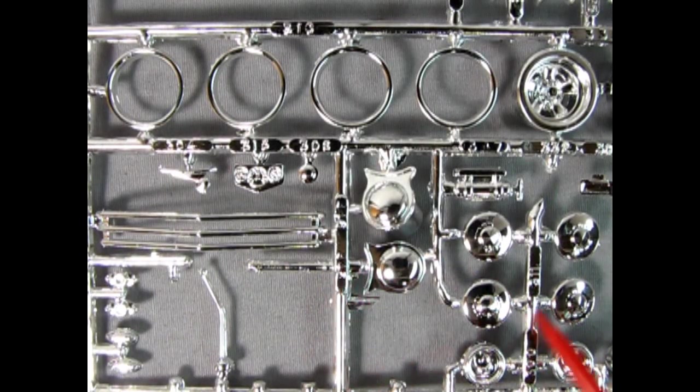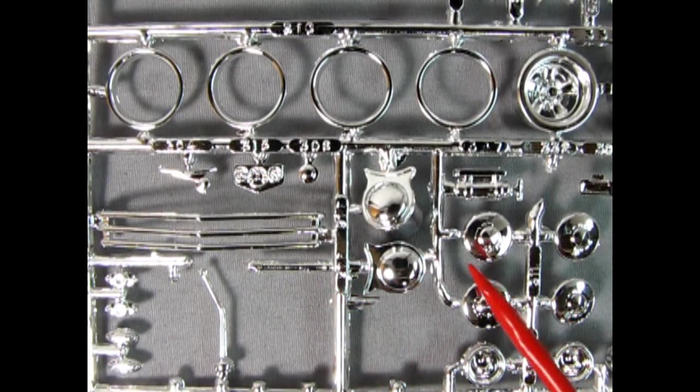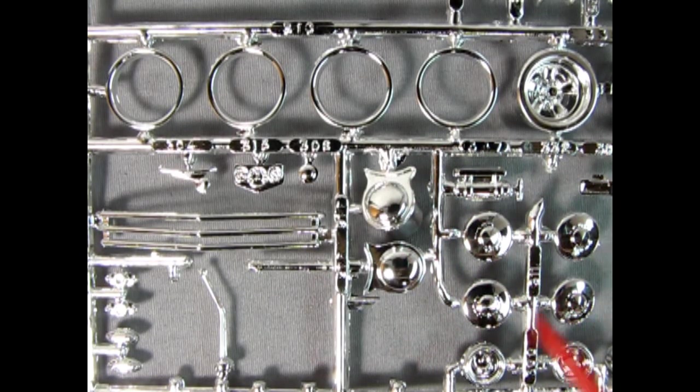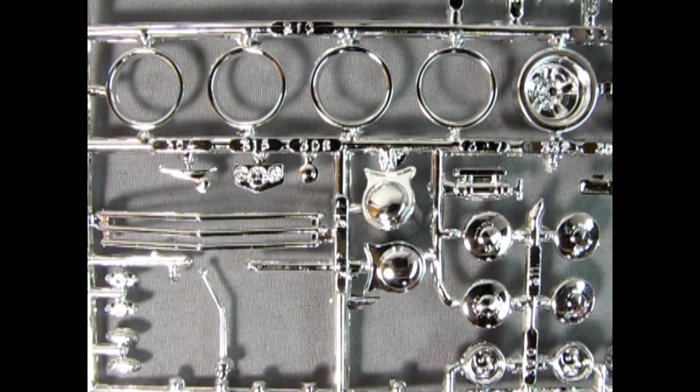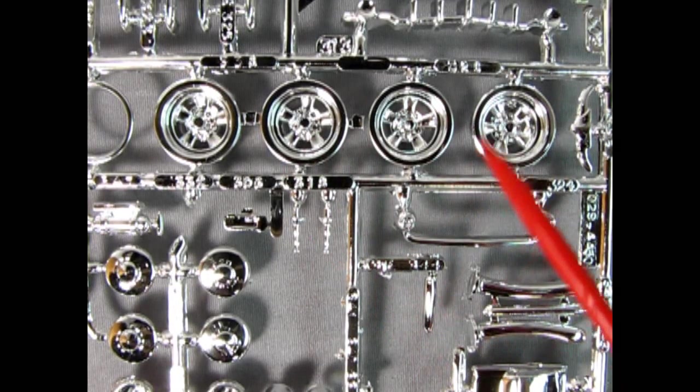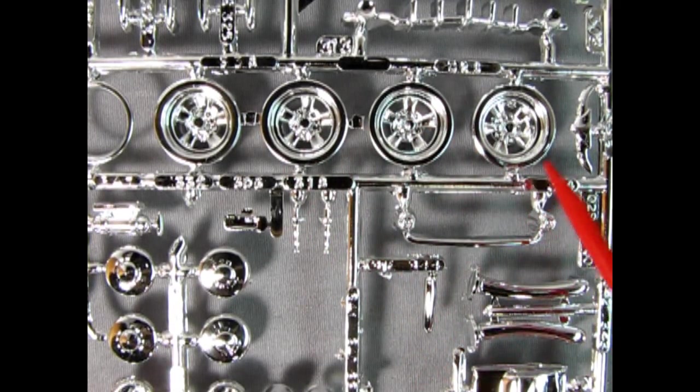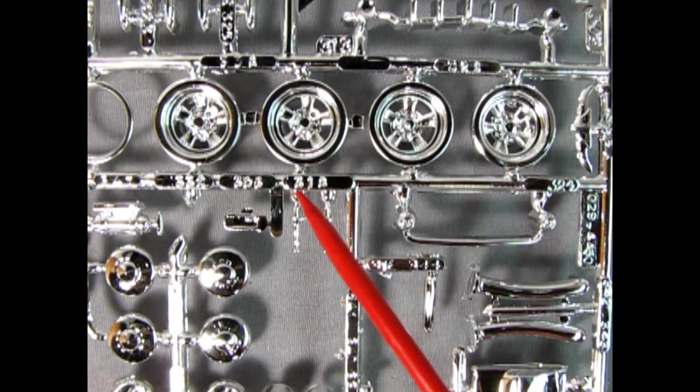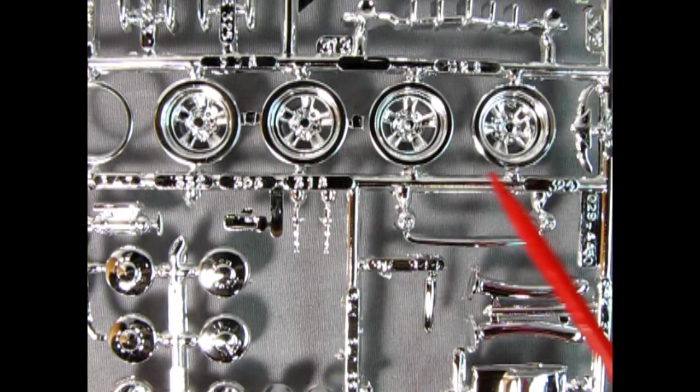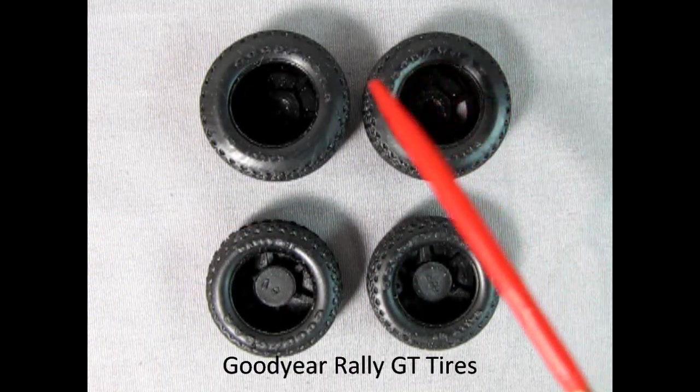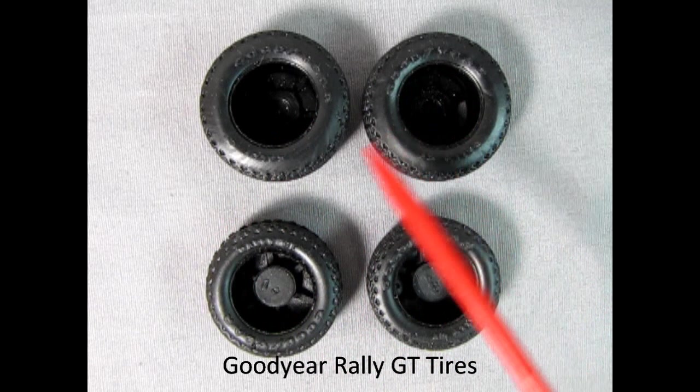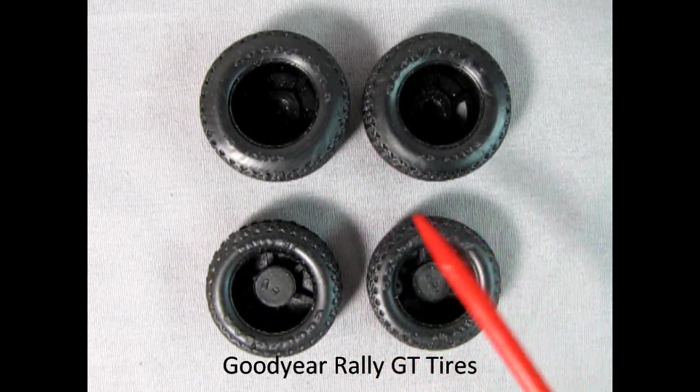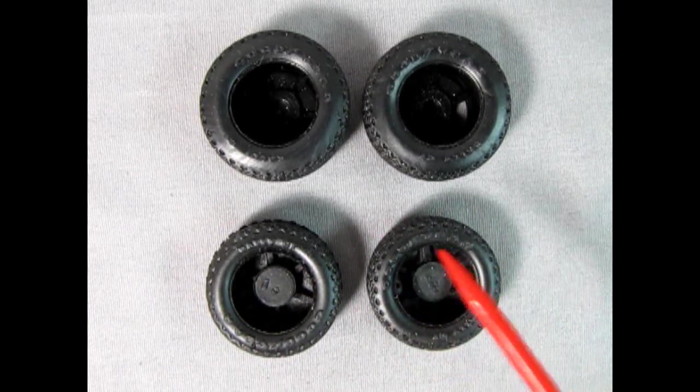Examining the parts on the chrome tree we can appreciate the high level of detail and quality. The chrome plated stock trim rings and hubcaps shine brilliantly adding a touch of elegance to the finished model. Additionally we stumble upon a set of 1970s era American racing wheels not originally included in this kit but present on the parts tree as remnants from a previous release. While the tires for these wheels aren't included you may find them in a fellow model builder's collection or a well-stocked parts box offering an opportunity to add a touch of customization to your build.